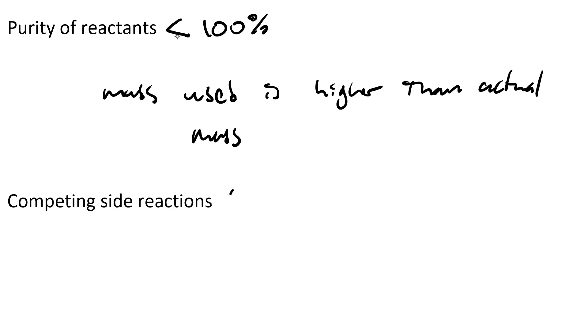There's also competing side reactions. Sometimes the same reactants can combine to give different products. For instance, when you take carbon and you burn it with oxygen, you can get carbon dioxide, but you can also get carbon monoxide.